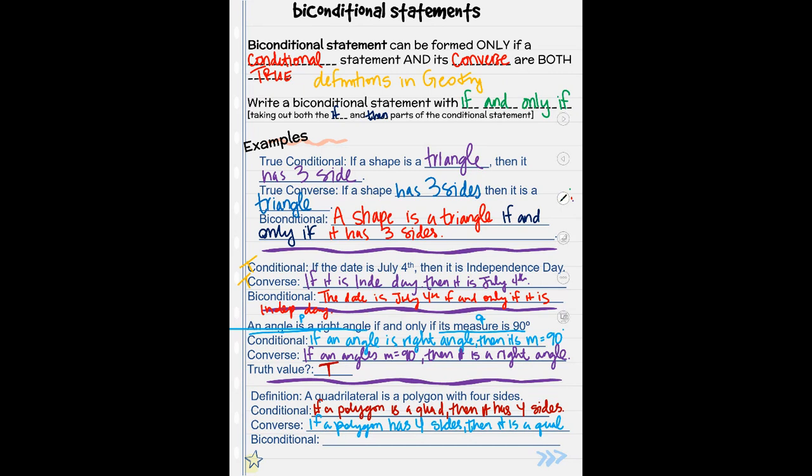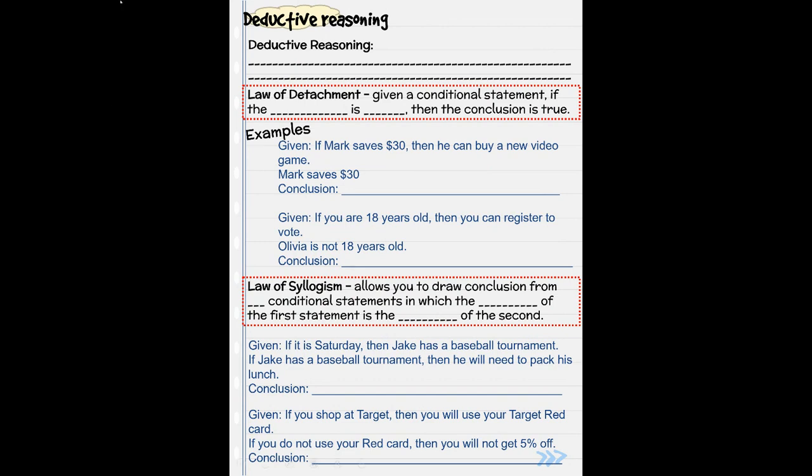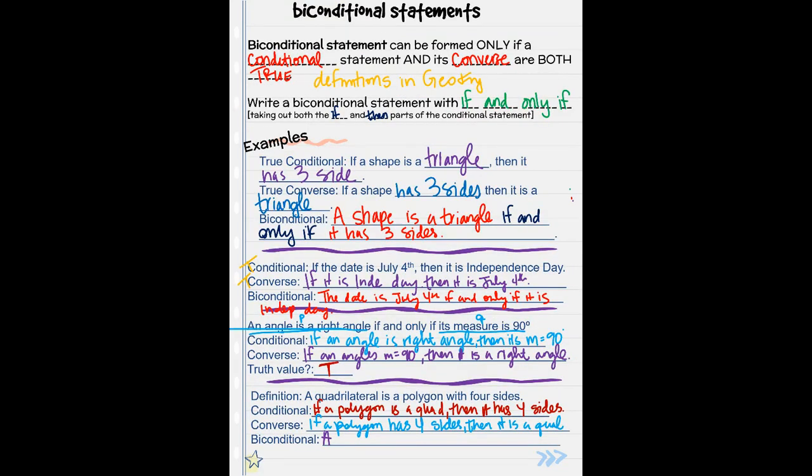Now, since this is true and it is a factual definition in geometry, then the biconditional is: a polygon is a quadrilateral if and only if it has four sides. The board does not like me.